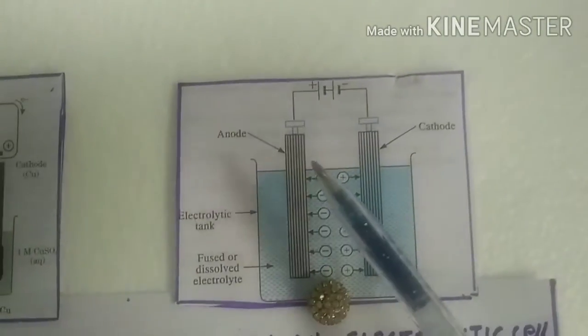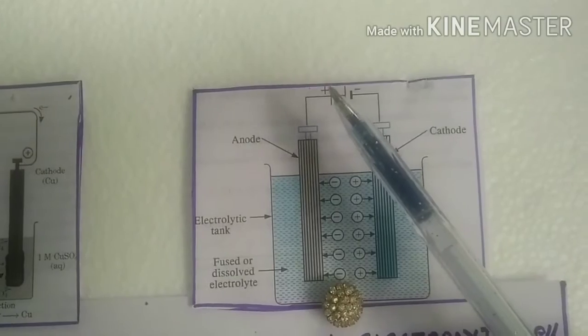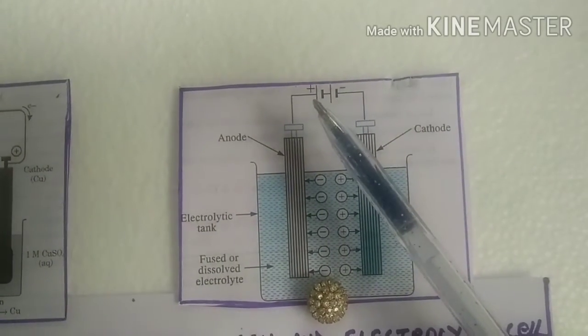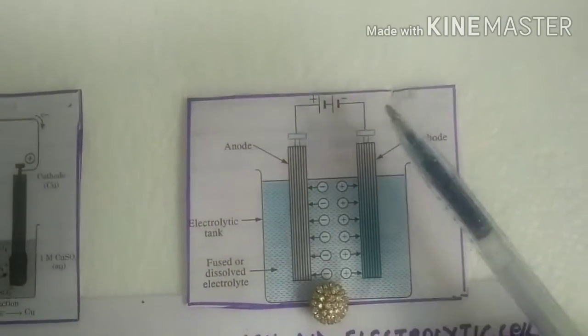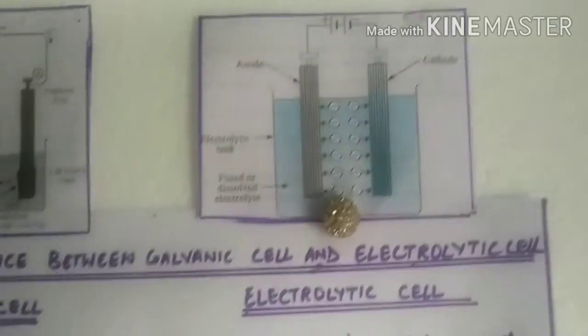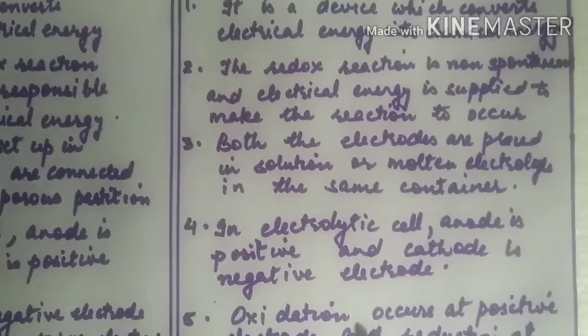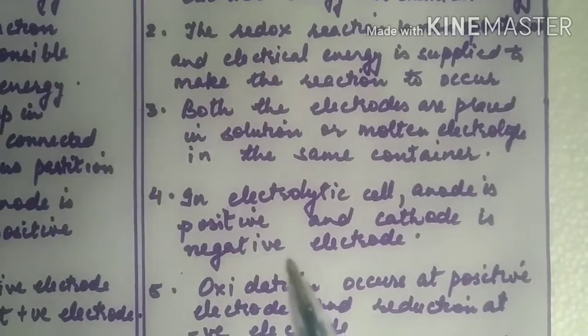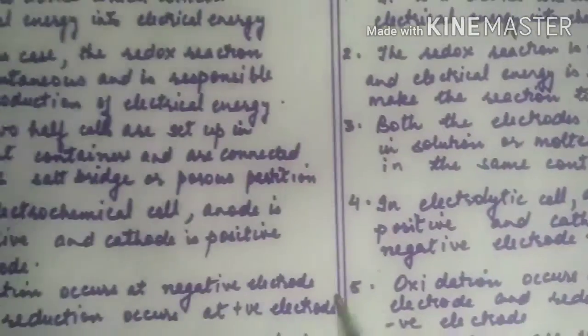Whereas in an electrolytic cell, anode is connected to positive terminal of battery and is positive, and cathode is connected to negative terminal of battery and is negative. So in electrolytic cell anode is positive and cathode is negative electrode.